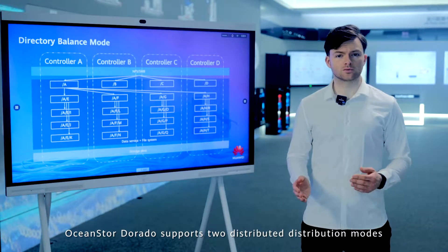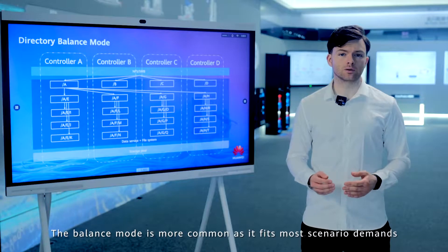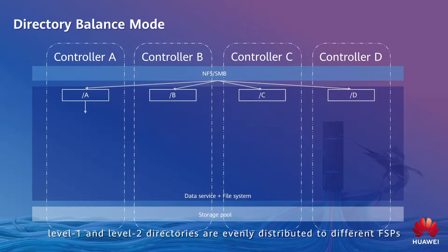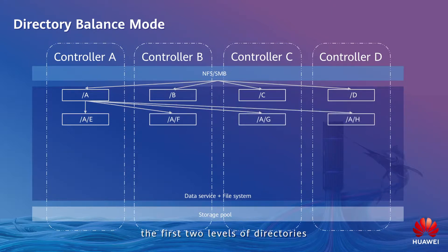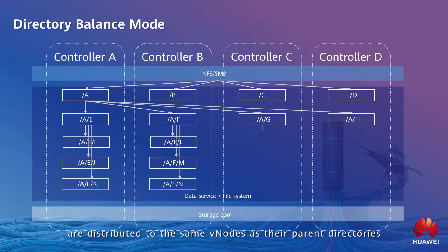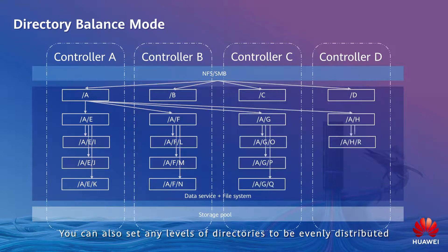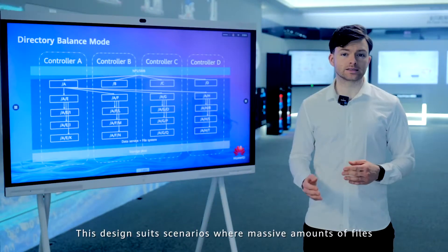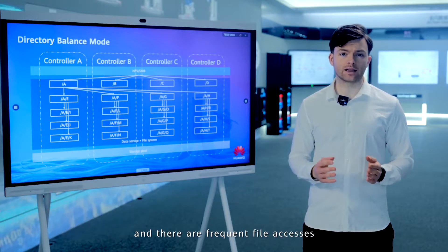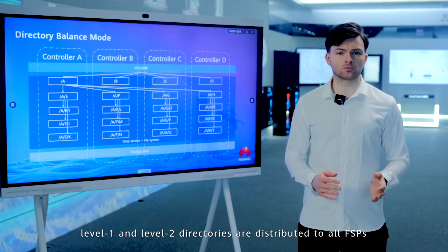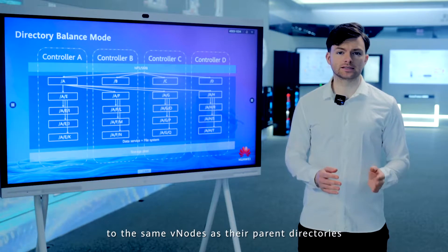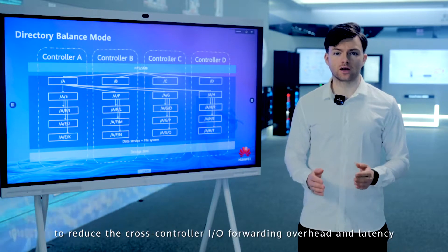OceanStore Dorado supports two distribution modes: balance and performance. The balance mode is more common as it fits most scenario demands. In the balance mode, Level 1 and Level 2 directories are evenly distributed to different FSPs — that is, the first two levels of directories are evenly distributed to multiple controllers, and subsequent levels of directories are distributed to the same Vnodes as their parent directories. You can also set any level of directories to be evenly distributed. This design suits scenarios where massive amounts of files are shared with a small number of Level 1 and Level 2 directories and there are frequent file accesses. Then, subsequent levels of directories are distributed to the same Vnodes as their parent directories to reduce cross-controller IO forwarding and overhead latency.